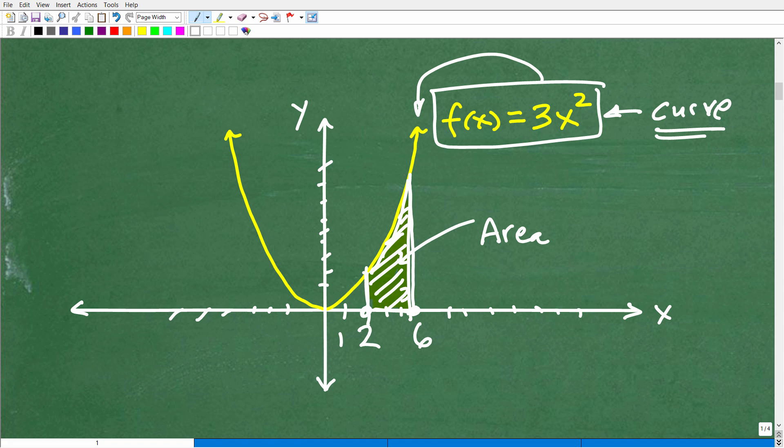Well, we have this thing in calculus called the integral. It looks like this. And this basically means find the area of anything you want. And the way it works is the following. We're going to put our starting point. We want to start from 2. And then we want to end at 6. So, we're going to start from 2 and end at 6.